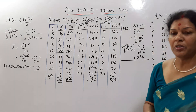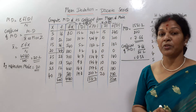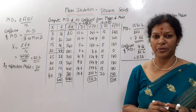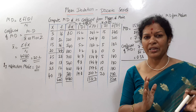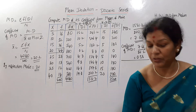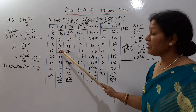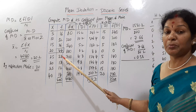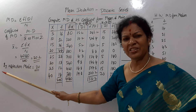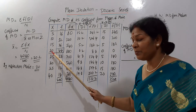Next we calculate from mode. Mode in discrete series is the most frequently occurring number — the most repeating number. Looking at this data, 20 is repeating 44 times. So by inspection, mode = 20.